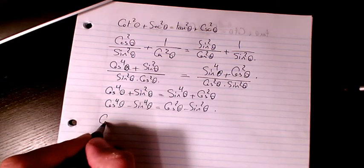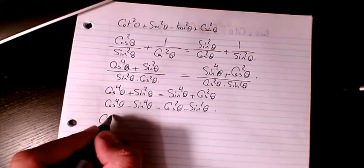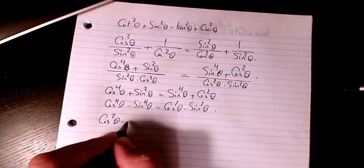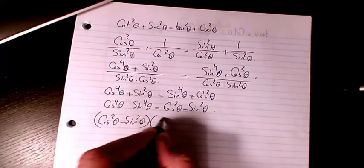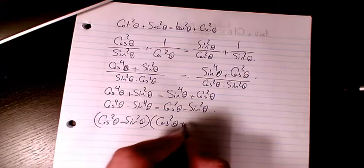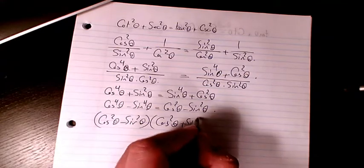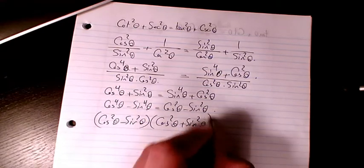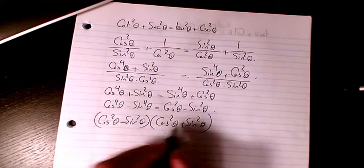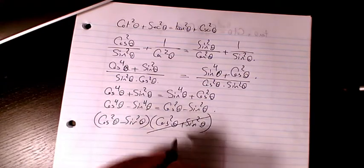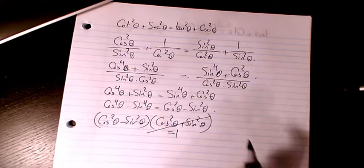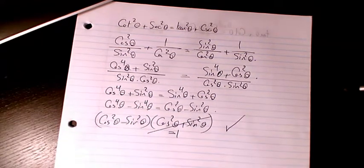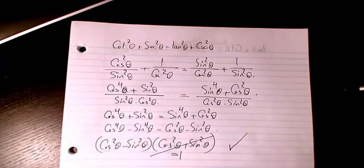To prove this I use the difference of squares. The left-hand side factors as cosine squared theta minus sine squared theta, multiplied by cosine squared theta plus sine squared theta. Since cosine squared theta plus sine squared theta equals 1, this simplifies to cosine squared theta minus sine squared theta, which equals the right-hand side. That's proven.